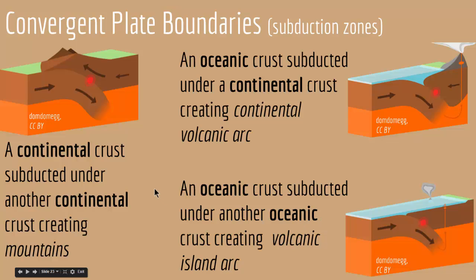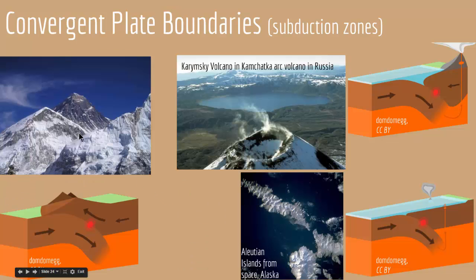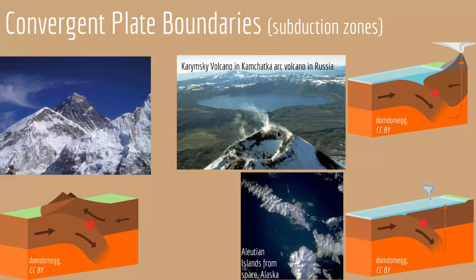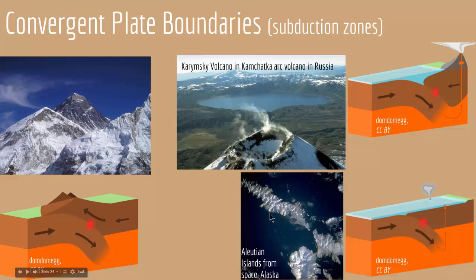The Himalayas are a result of two continental crusts colliding — specifically, the Indo-Australian plate colliding with the Eurasian plate long ago. The Karmsky volcano in Kamchatka, Russia, is an example of a continental crust colliding with an oceanic crust — the result of the Pacific plate subducting under the Eurasian plate. The Aleutian Islands in Alaska are an example of two oceanic crusts colliding — the Pacific plate being subducted under the North American plate.